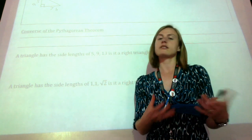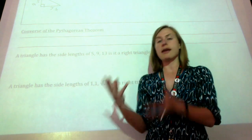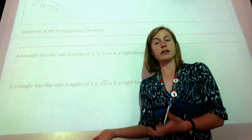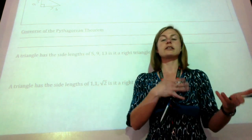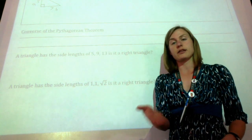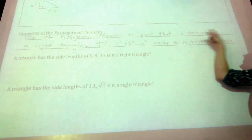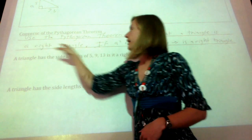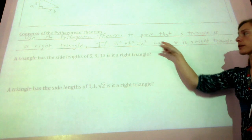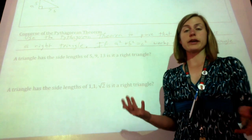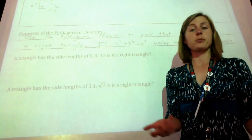The Pythagorean theorem says if you have a right triangle, then a squared plus b squared equals c squared should work. What the converse says is if a squared plus b squared equals c squared works, then it is a right triangle. So the converse means you can use the Pythagorean theorem to prove that a triangle is a right triangle. We're going to see if two different triangles are right triangles by checking if the Pythagorean theorem works with their side lengths.